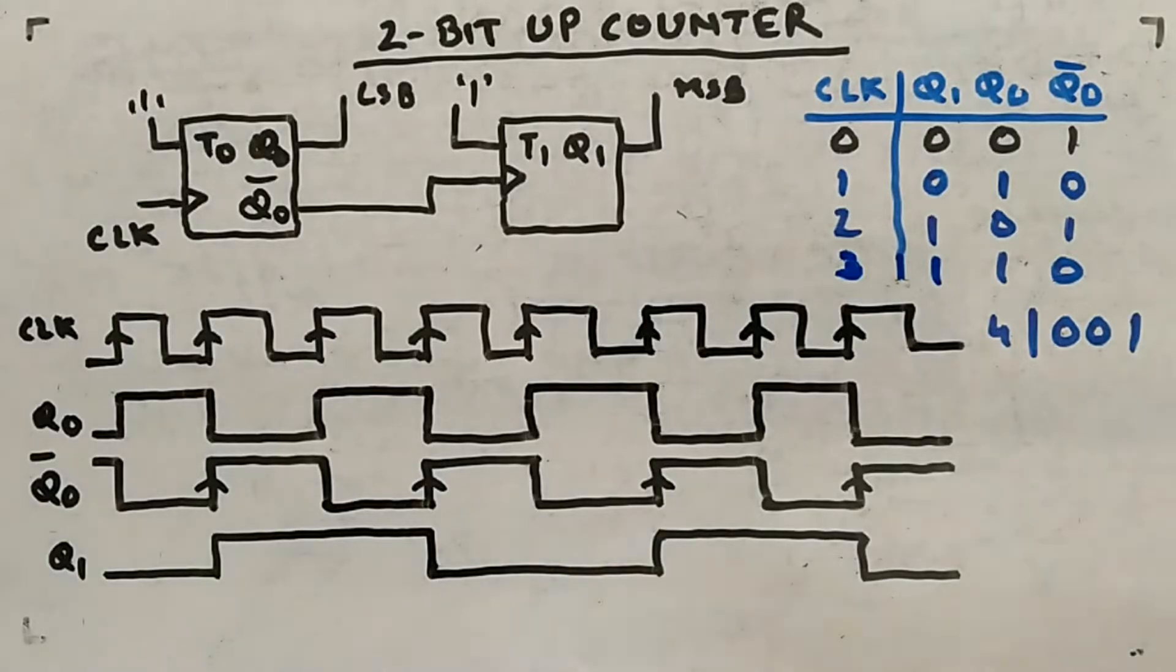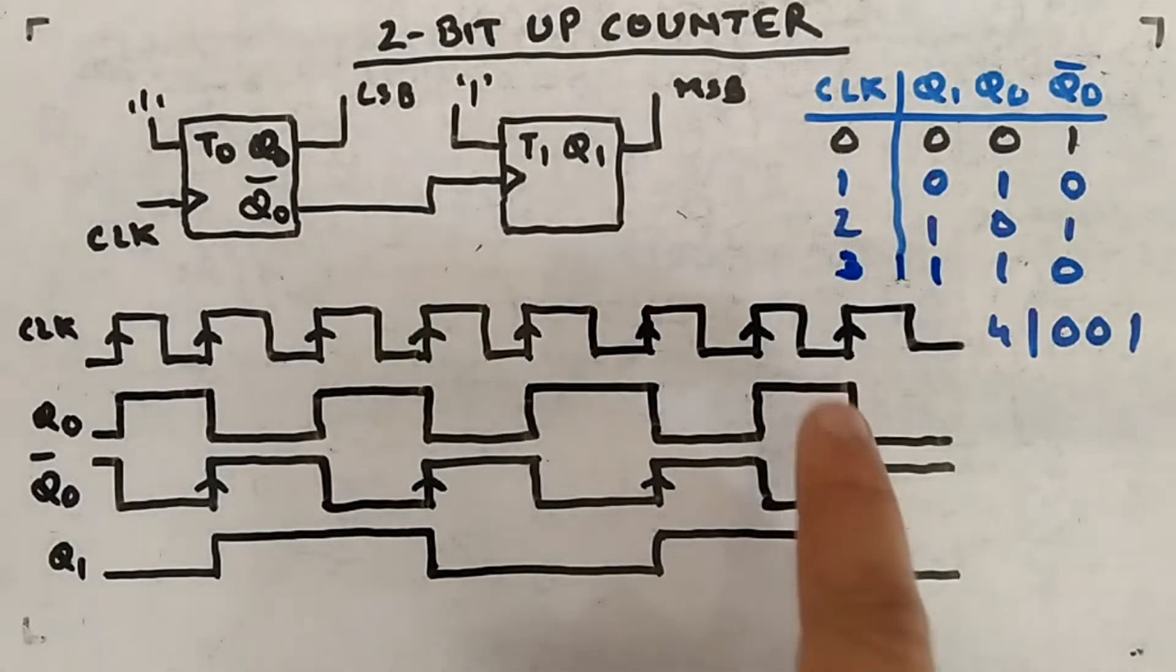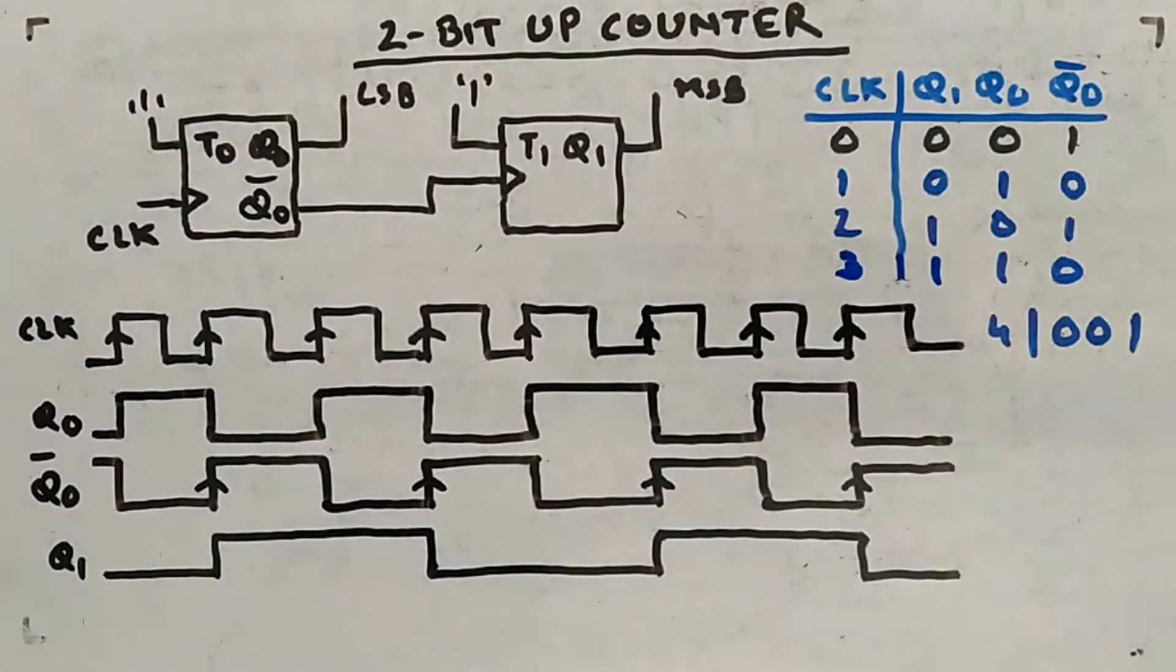If you will see Q1 and Q0, what is this: 00 was there, then 01, 10, 11. Then again 00, 01, 10, 11. You are aware of this. So it's an up counter. Even with positive edge triggering you can achieve up counting and down counting.